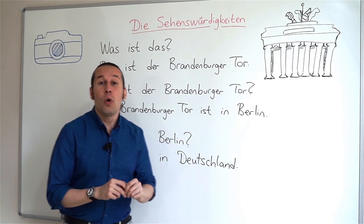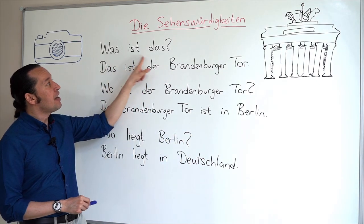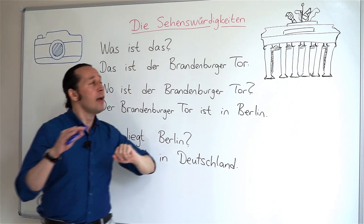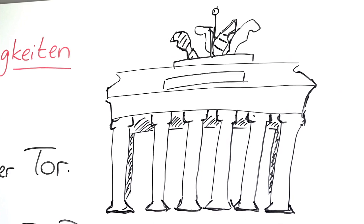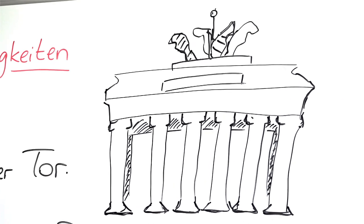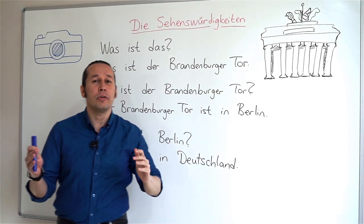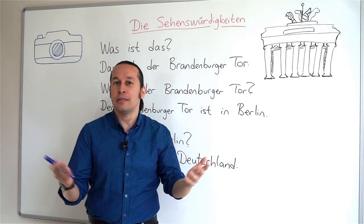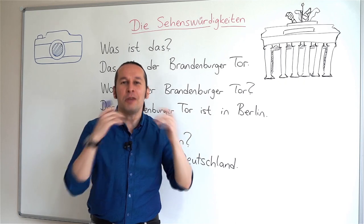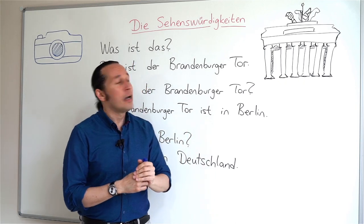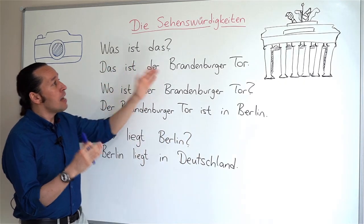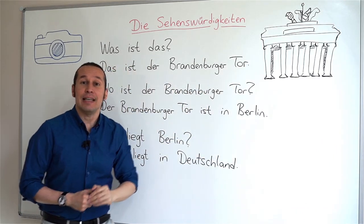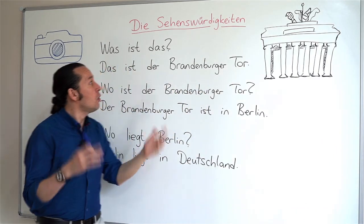When I say 'what is this', I'll say 'was ist das?' I tried to draw the Brandenburger Gate. This gate is in Berlin, and Berlin is the capital of Germany. So I need to ask 'what is this?' — was ist das? — which means 'what is this?'